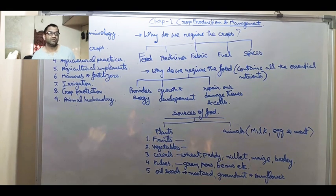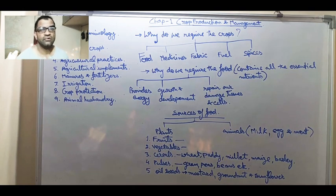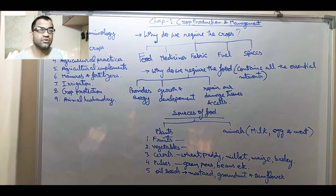Now there are different sources of food. For example, we are getting the food from plants and as well as from animals. What kind of food we are getting from the animals? We are getting milk, egg, and meat.